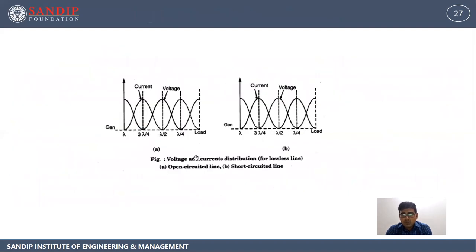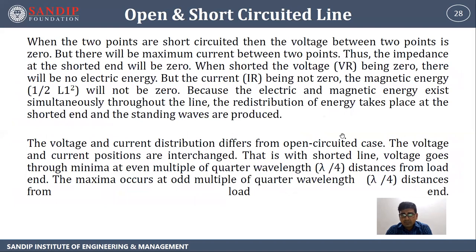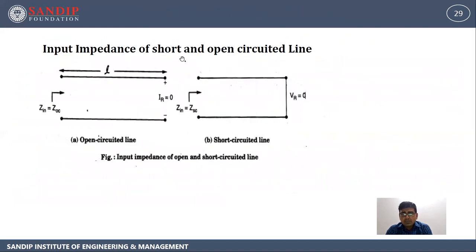The current and voltage distribution along the line is shown in the figure — for open circuited and short circuited lines. Input impedance: for open circuited line, Z_in = Z_oc and I_r = 0. For short circuited line, Z_in = Z_sc and V_r = 0.